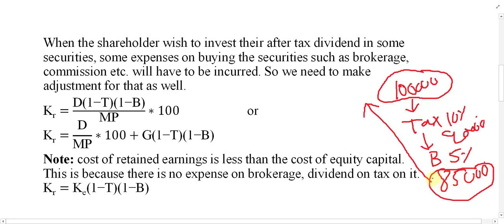Since shareholders can invest only 85,000, we keep that amount in the business and pay return on 85,000 to the existing shareholders. So brokerage and tax must be adjusted in the formula: Kr = D × (1 − t) × (1 − b) ÷ MP × 100. If there is a growth rate g, the adjusted formula becomes: Kr = [D ÷ MP × 100 + g] × (1 − t) × (1 − b).